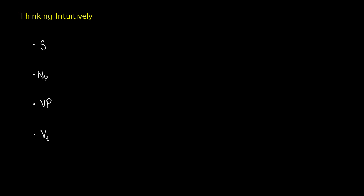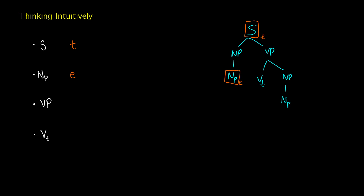Now let's think intuitively about some syntactic categories and their types. I'll draw a little tree — not putting in any of the little words yet. We have a transitive verb and a verb phrase, and two proper names for our nouns. If we think about the types of these things: what do we get at S? We get a full sentence, and we can evaluate sentences as true or false. This means S should be of type T. And proper names — someone like Mary — that's a person in a world, so that should be type E.